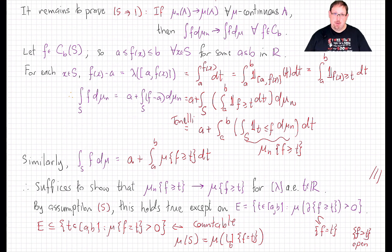Next time we'll continue to explore weak convergence and add some more conditions to the Portmanteau theorem in the special case we're most interested in — where our measures are measures on Euclidean spaces.